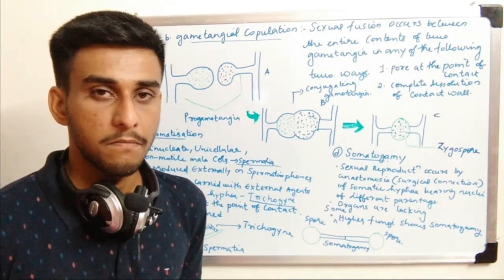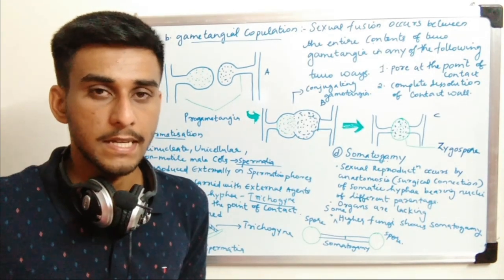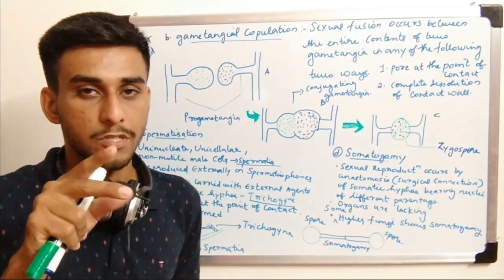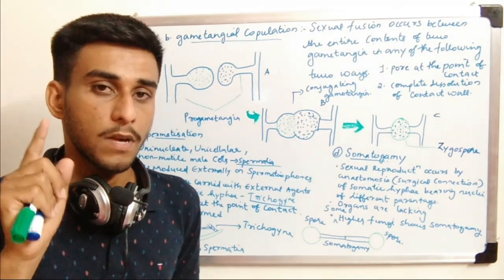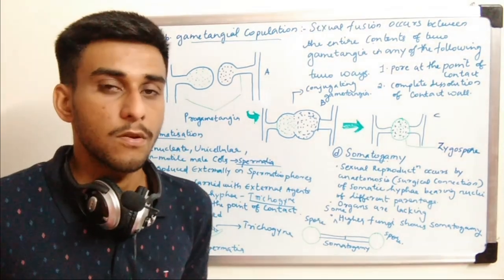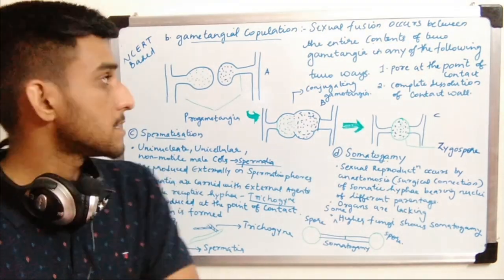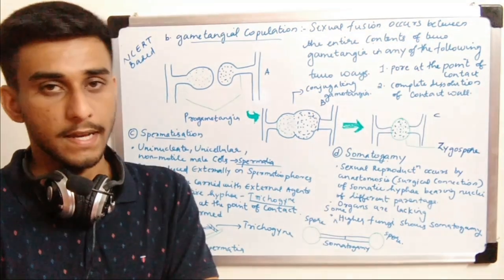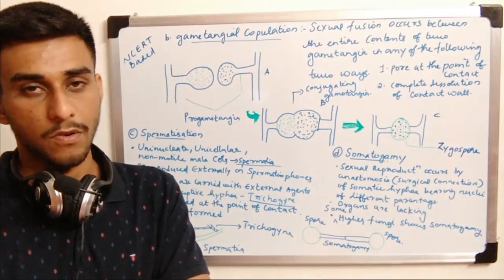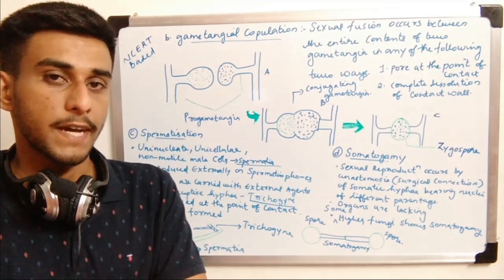In gametangial contact, only the male nucleus is transferred from the antheridium to the oogonium. But in gametangial copulation, the entire content fuses. After mixing or conjugation, a structure is formed known as the zygospore. The zygospore contains haploid spores after meiotic division.